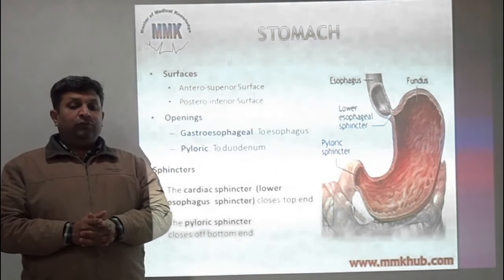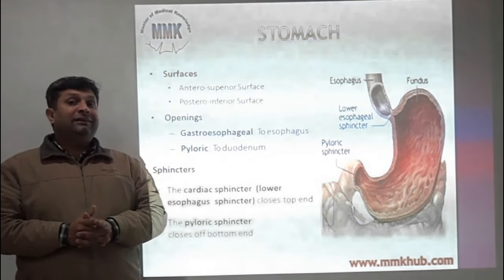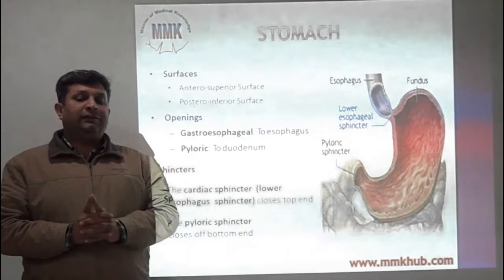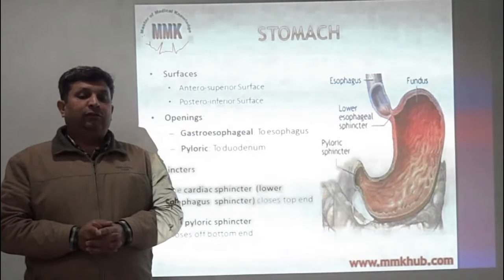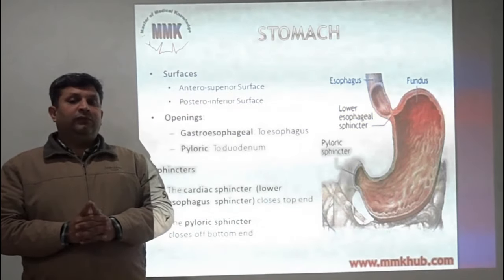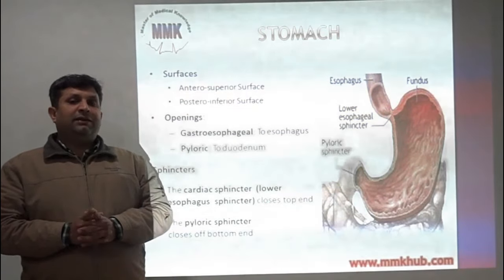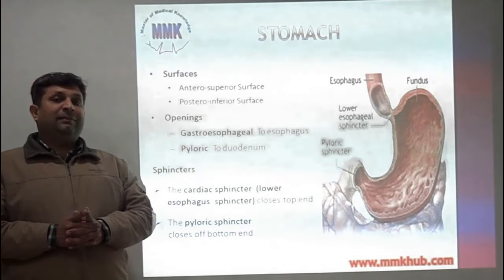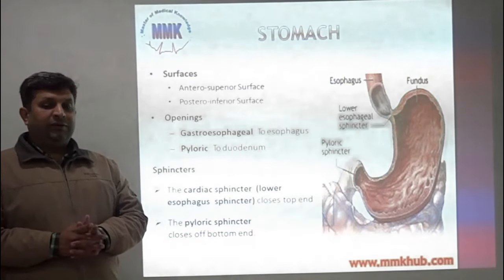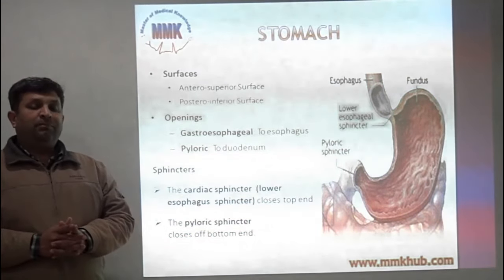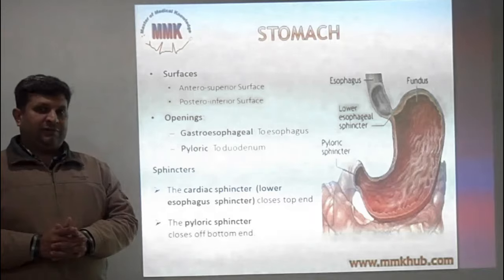There are two sphincters. One is the cardiac sphincter, which is located at the esophageal opening and closes the upper end of the stomach. The second is the pyloric sphincter, which closes off the bottom end of the stomach.